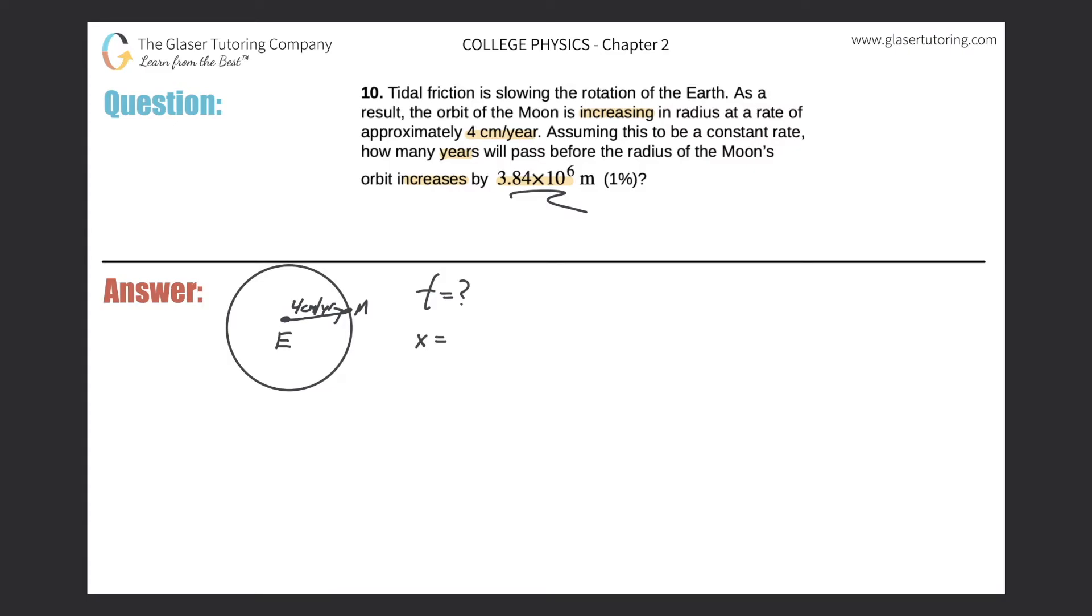So my displacement value in the problem is 3.84 times 10 to the 6 meters. And remember, they also gave us the rate at which it's increasing. So they told us the velocity and they said it's 4 centimeters per year. So now step back and consider, do you know a relationship between these mathematical variables? Right, and we do. The velocity is equal to the change in displacement divided by the change in time.